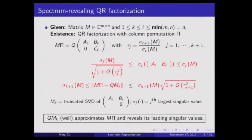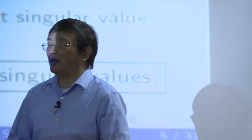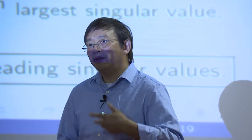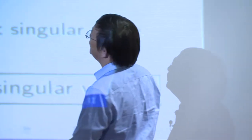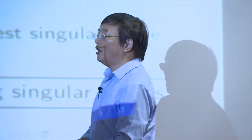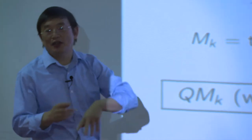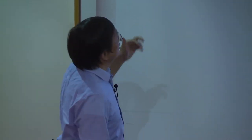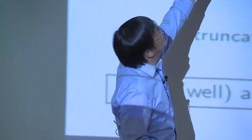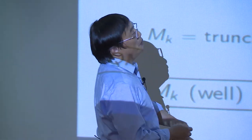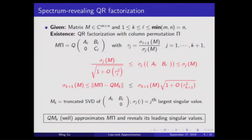I'm going to start with QR factorizations. Classical QR was developed for least squares problems, and then people found out that by doing QR after column permutations, some rank-revealing property shows up. Later it was found that if you do the column permutation correctly, you can actually work out some very nice singular value bounds. You have a permutation matrix π that shuffles the columns of matrix M, and after that you do a QR factorization. To get a low-rank approximation, all you do is throw away the bottom-corner C matrix.